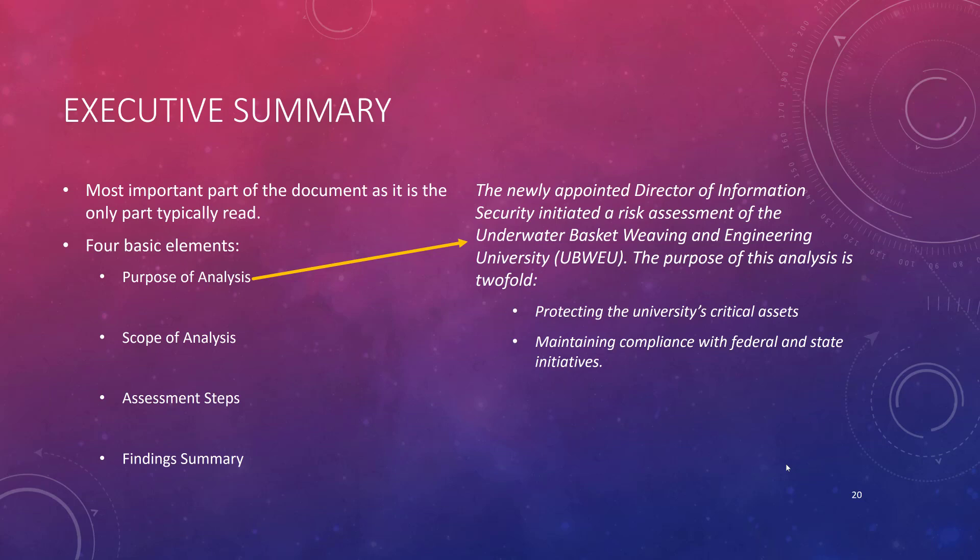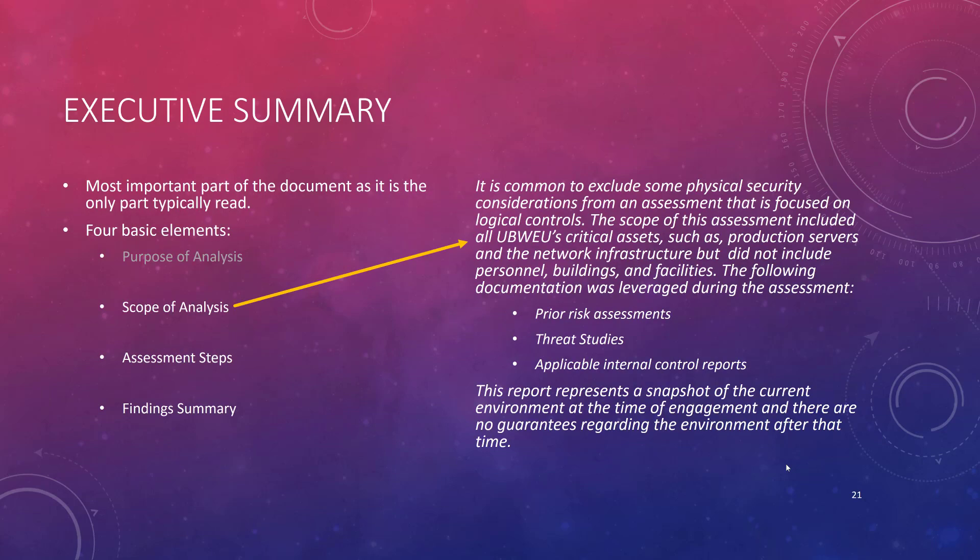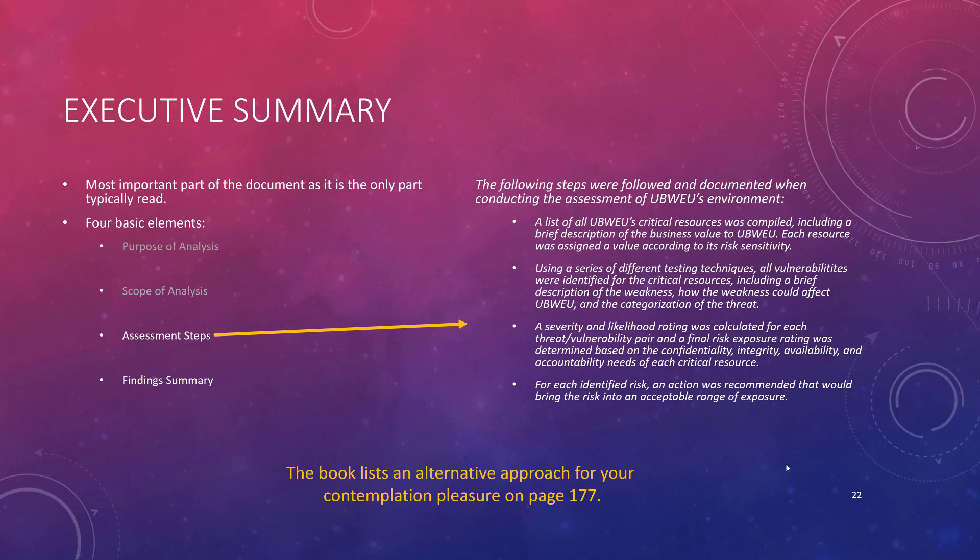Here's an example of a purpose of the analysis — we're looking at the Underwater Basket Weaving and Engineering University, with a terrible acronym. The purpose is listed there, pretty straightforward; you don't want to waste a lot of space on it. Then move into the scope of the analysis, which builds confidence in the reader that you know what you're doing and what was in and out of the actual report. From there you move into what assessment steps were taken. There is an alternative approach listed on page 177 of the book. About half a page on this section.